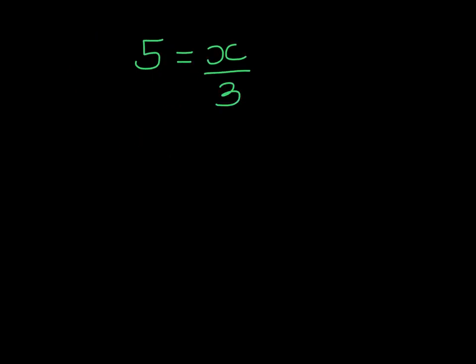Here x is being divided by 3, so the inverse is to multiply by 3 on both sides. On the right-hand side, if I multiply by 3 to divide by 3, I'm left with 1 with x, and on the left-hand side, 3 times 5 is 15.